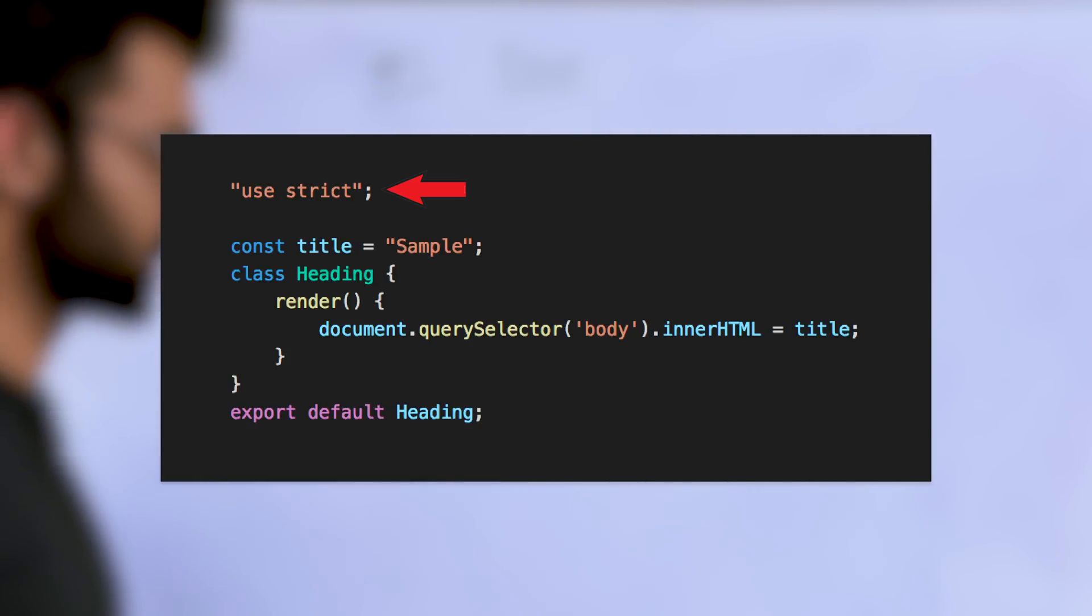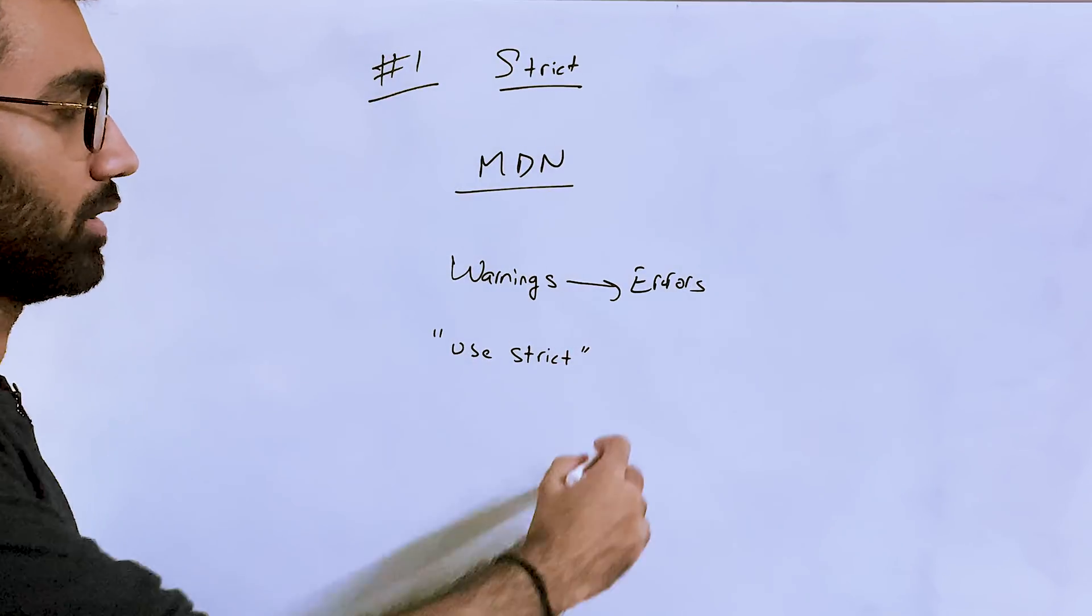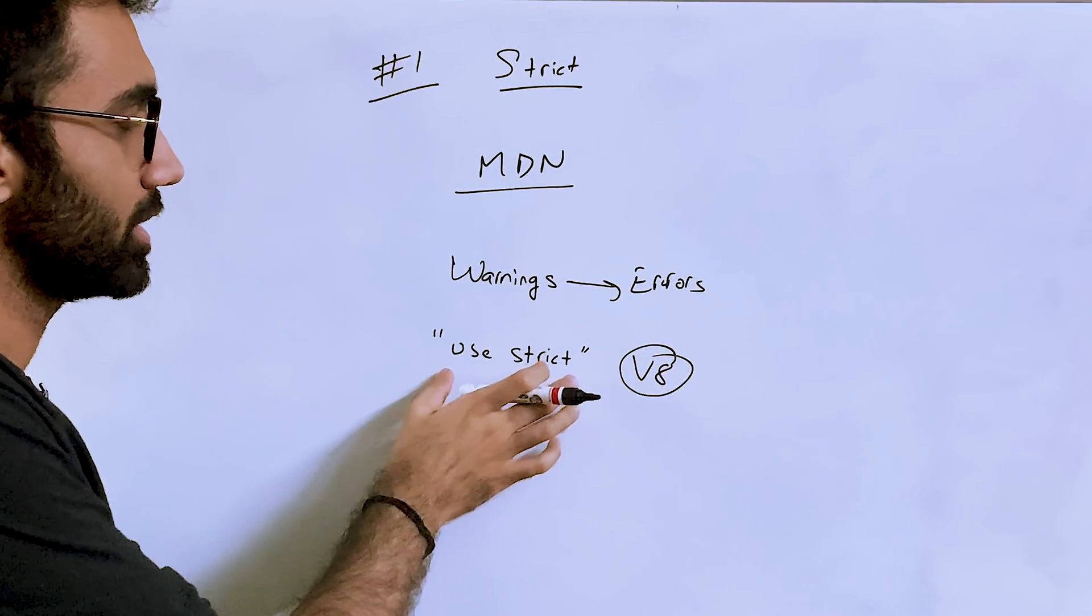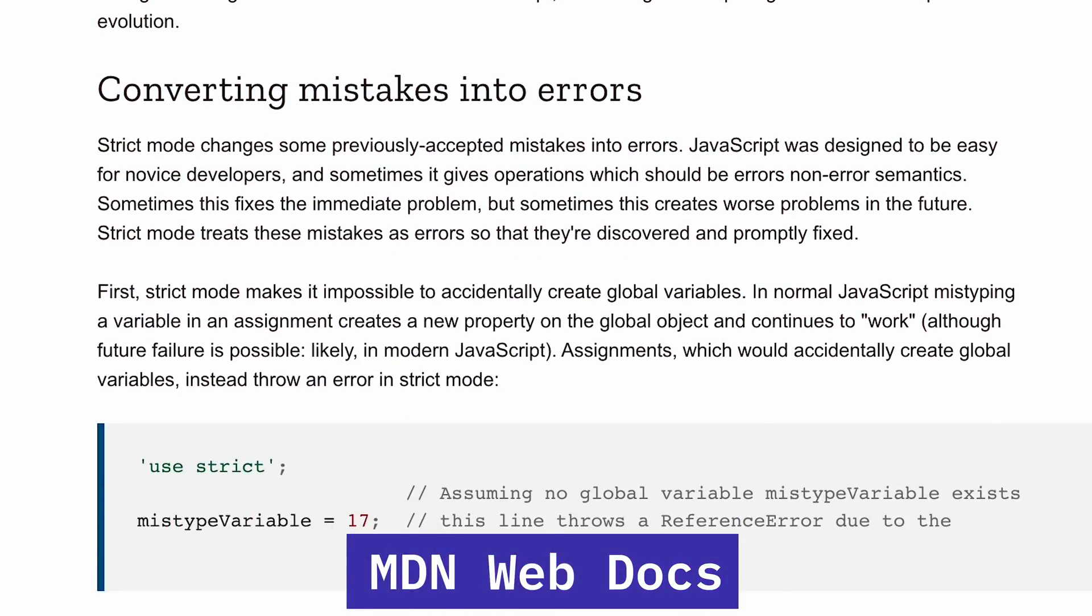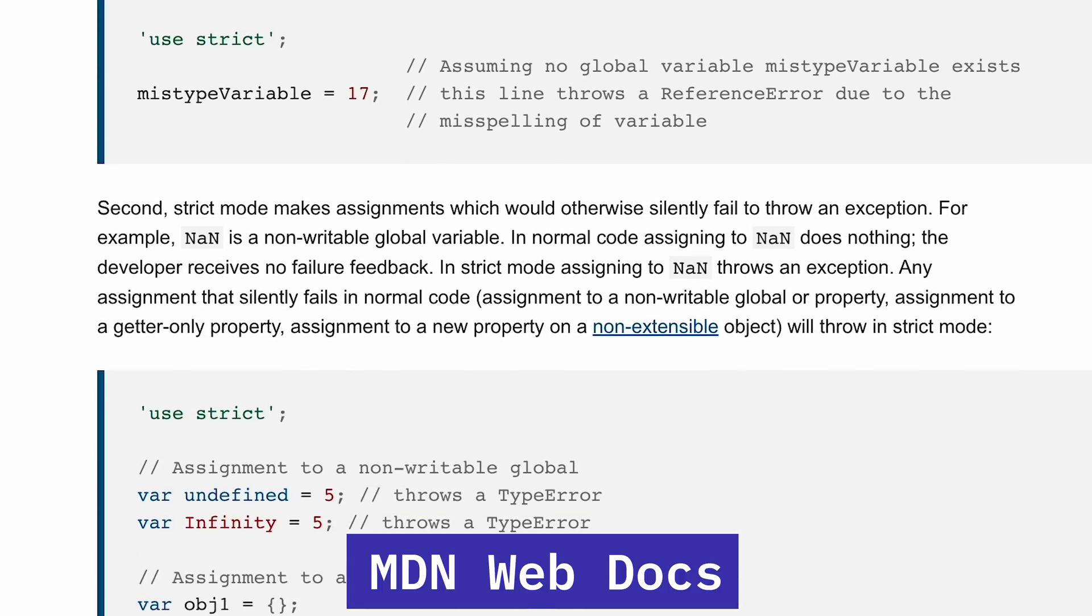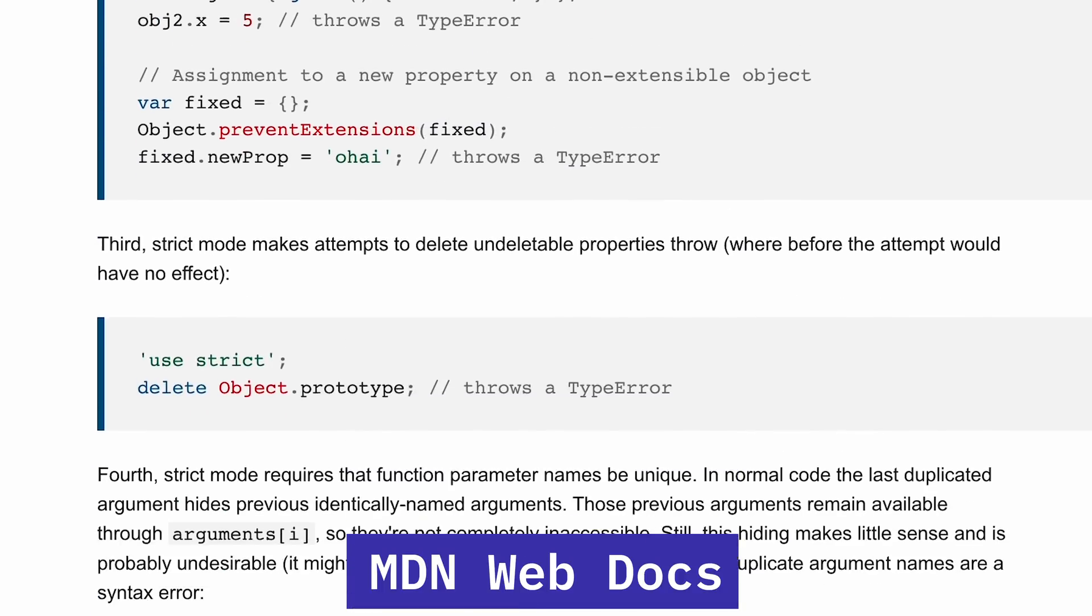The moment you do that, a browser engine, for example V8, if it sees it, it's going to trigger the strict version of JavaScript. As you can already see on MDN, there are a bunch of advantages and a bunch of things which you get out of strict mode when you're using it properly.